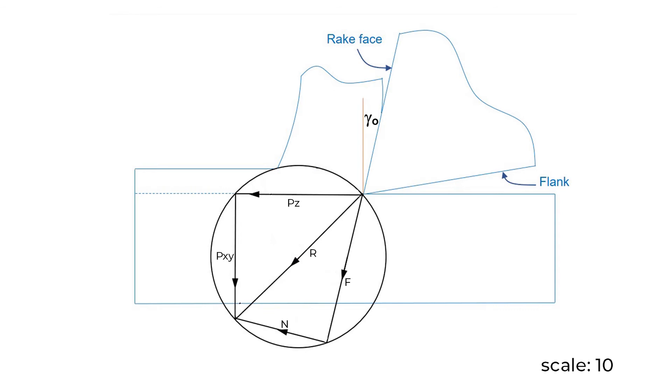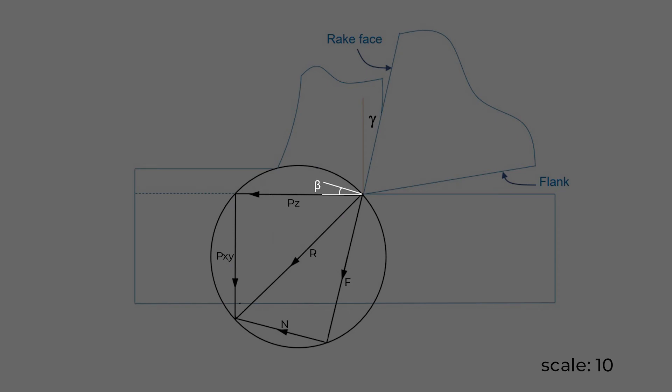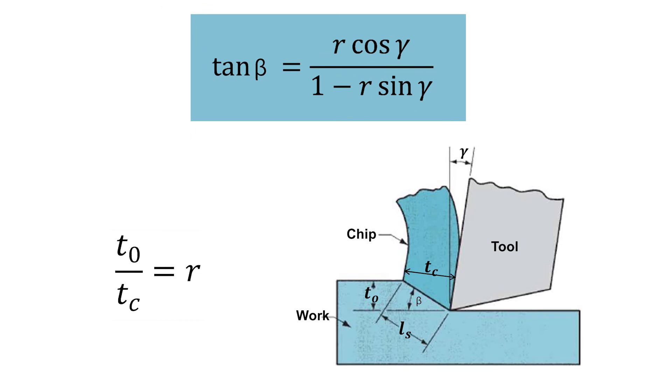For determining Ps and Pn, we need beta which is the shear angle. It is calculated using this formula: tan beta is equal to r cos gamma by 1 minus r sin gamma. Here r is equal to t naught by tc, where t naught is the depth of cut and tc is the thickness of chip.